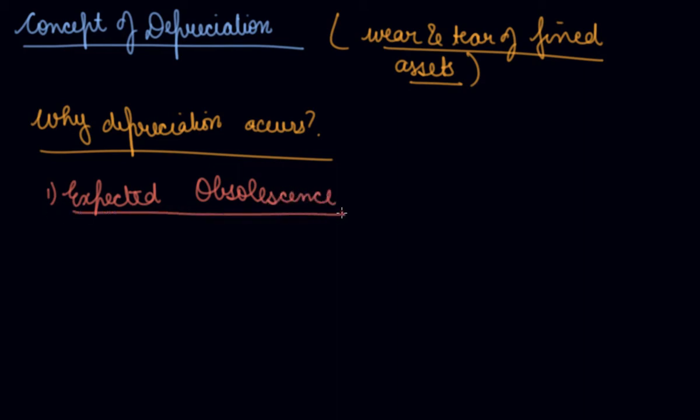Which means that your fixed asset has become obsolete just because you have the idea that there will be a change in technology that your machinery will be outdated. Let's suppose a black and white TV which are outdated now because there are new technologies which have developed. Now, from the LCD, they have developed a new technology of TV that is LED. So, there are changes in the technology. So, it is an expected obsolescence. Which means that if there is some change, your machinery will become obsolete.